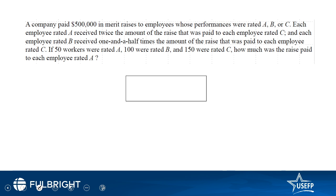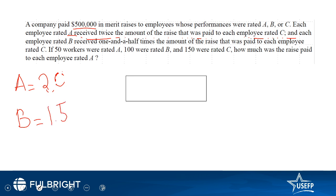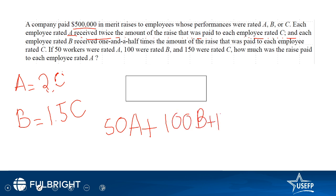The total bonuses given out were $500,000. A received twice of C, so the equation is: A = 2C. B received one and a half times C, so B = 1.5C. Now, 50 workers rated A means 50 × A is the total A workers received, plus 100 × B plus 150 × C equals the total of $500,000. We need to find how much each A-rated employee received.